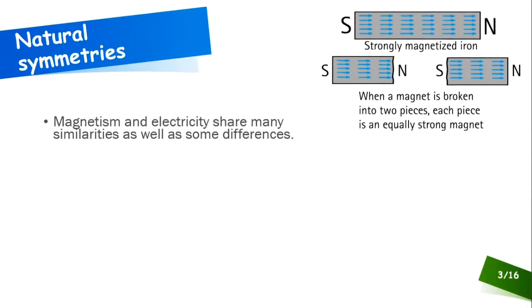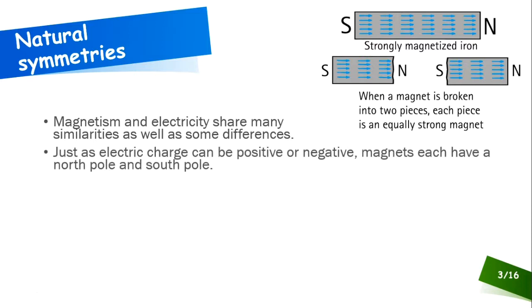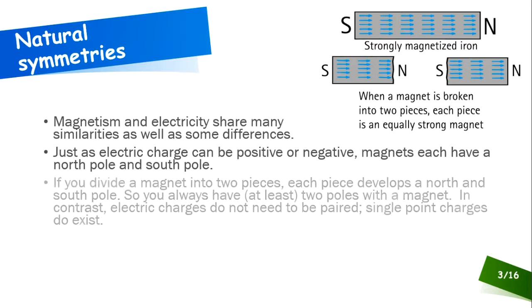Let's talk about that magnetic property for a moment. Magnetism and electricity are actually very similar to each other. But there's also some important differences, so we need to be aware of both the similarities and the differences. An electric charge can be positive or negative, and in like manner, magnets have a north pole and a south pole. So far, we're pretty much running on the same level ground here.